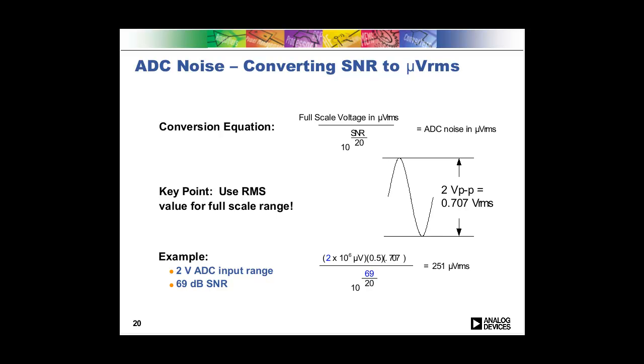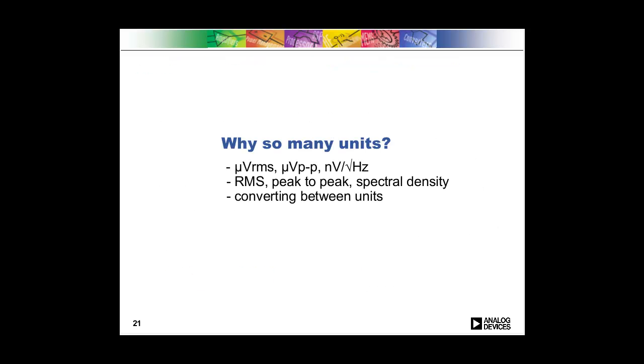Your ratio is your full-scale voltage in RMS over your noise voltage in RMS. So I think sometimes folks make the mistake of saying, okay, my ADC range is 2 volts peak-to-peak, and so I use 2 volts in the equation. And really, what you would do is you would use the RMS value of a sine wave going into that 2 volts peak-to-peak range. So that would be 0.707. So we got a little example there of how you do the math to go from the 69 dB SNR ADC with a 2-volt input range and figure out what the voltage noise coming out of the ADC would be.